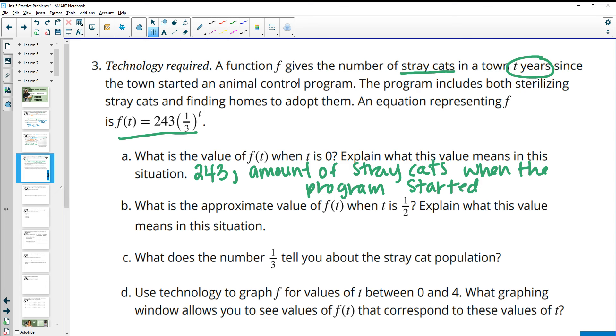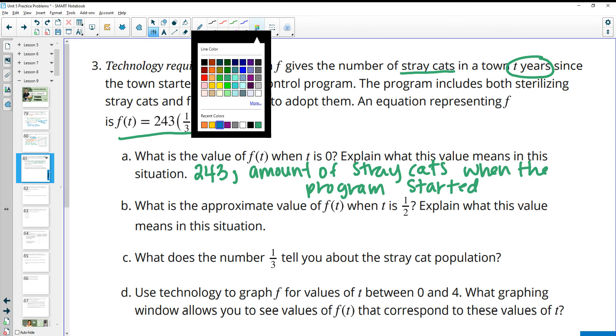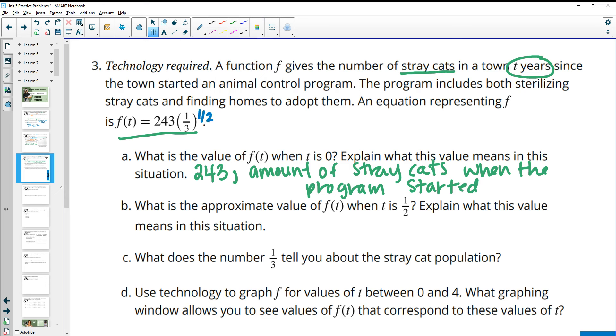What's an approximate value of F of T when T equals one half? Then you're going to want to go ahead and plug one half in for T or 0.5. It's probably easier in your calculator just to make sure that you don't have anything weird happen. If we plug that in, we're going to get about 140. This means six months in, because T is in years, so half of a year, there's 140 cats. So after half a year, there are 140 stray cats. The number has been reduced from 243 to 140 after half of a year.